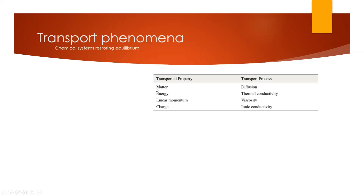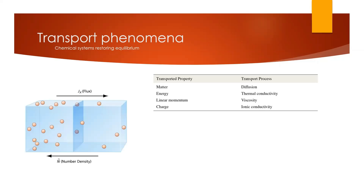In order for there to be a net transport of any property, the system must be out of equilibrium. In the case of diffusion, the distribution of molecules must be uneven across the system. The system will soon reach equilibrium when the number of particles is evenly distributed. A central concept in transport phenomena is the flux, which is defined as the quantity transferred through a given area per time. Flux only occurs when there is an imbalance; otherwise the net flux will be zero. Since there are more particles on the left side than the right side, there will be more particles moving from left to right in a net flux.